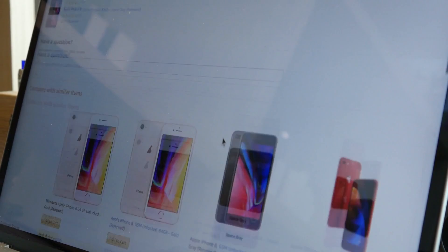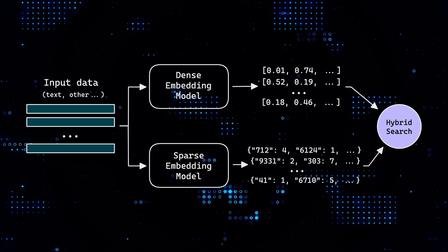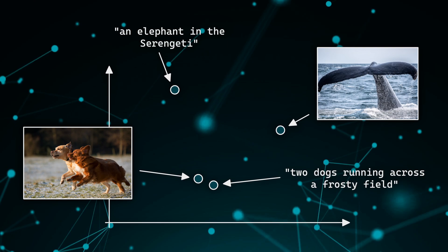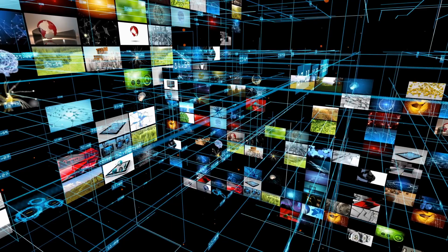Today we're going to be taking a look at quite a few things that we're going to apply in the scenario of a multimodal e-commerce search engine. We're going to be covering hybrid search, which is the idea of searching across both sparse vectors and dense vectors. We're also going to be looking at multi-modality, where you have multiple modalities of data within either your query or your search space.